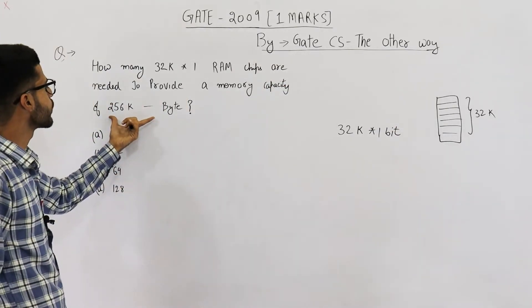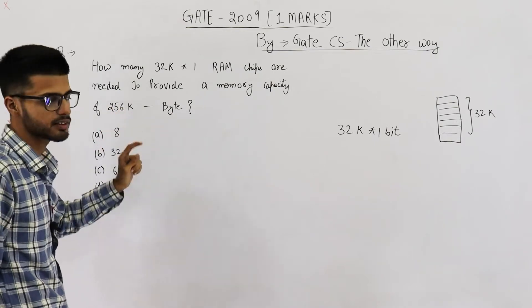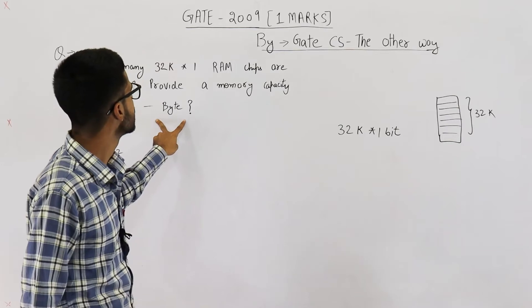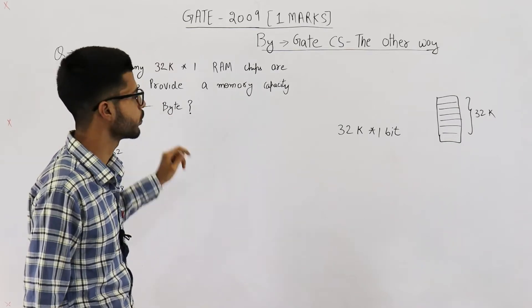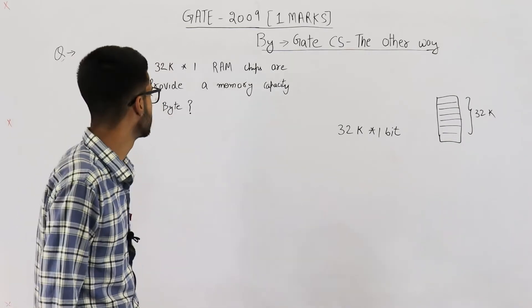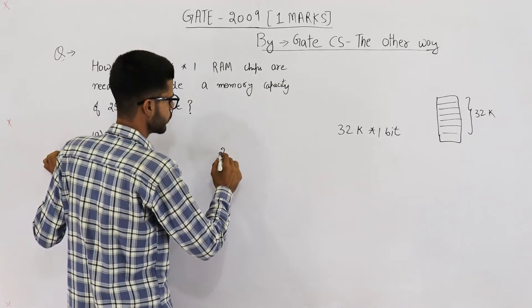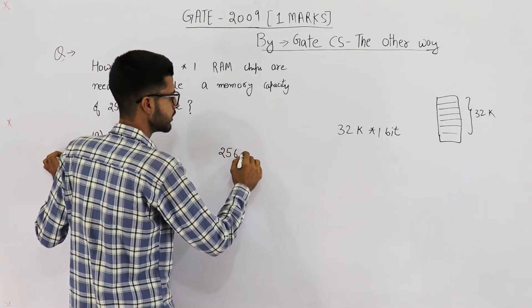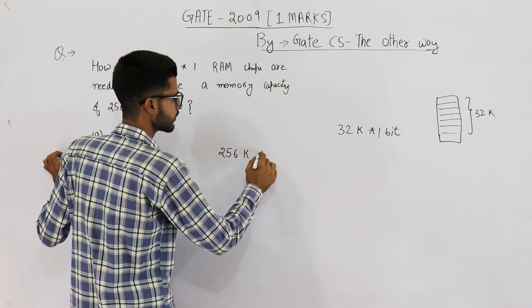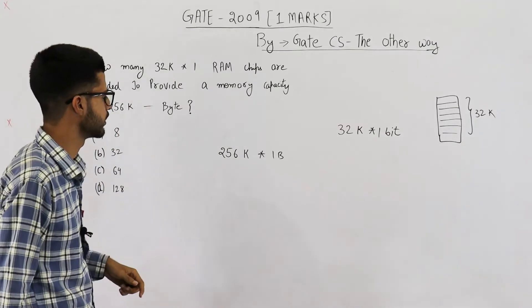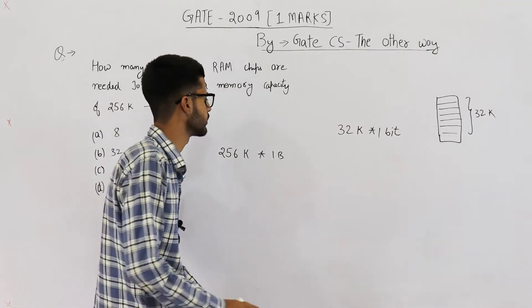And you are required to design a chip of 256k locations, and each location will contain 1 byte data. Actually they must write it in this way: 256k x 1 byte. But they have simply written 256k byte. Let's also assume this.